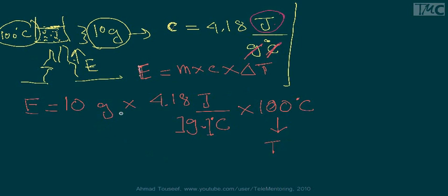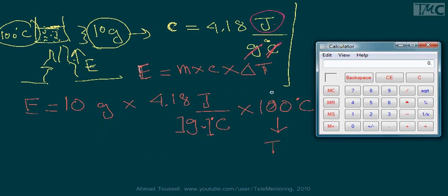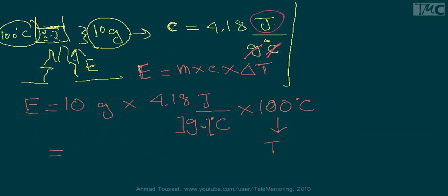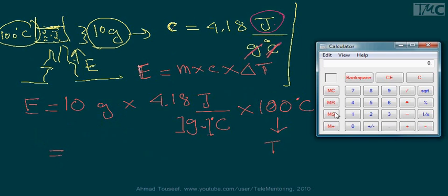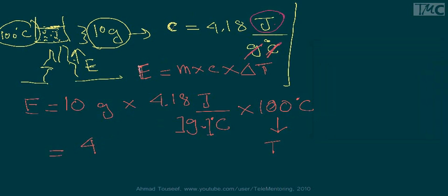Now let's do a simple multiplication. Let me bring out my calculator. Let's determine the product. We have 10 grams multiplied by 4.18 joules per gram per Celsius, multiplied by 100, which is 4,180.